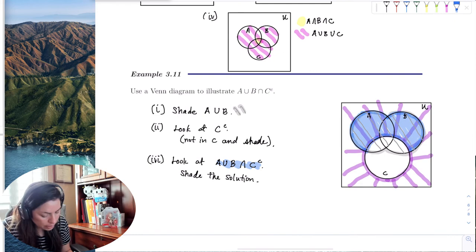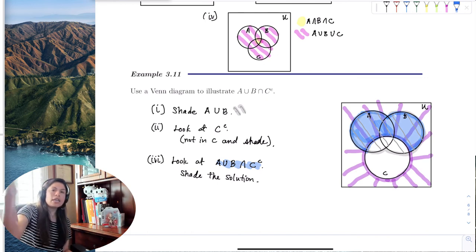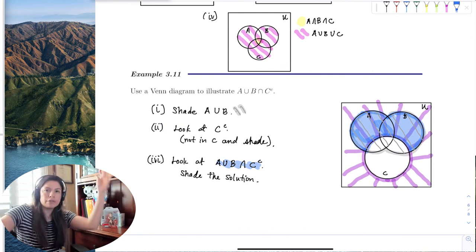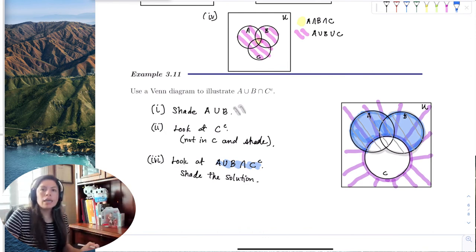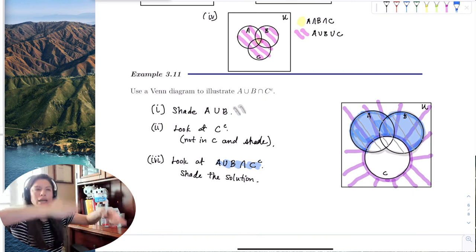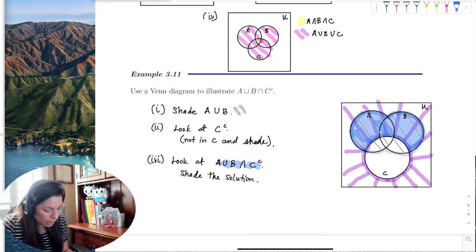And this is A union B intersection with C complement. So notice none of the C is shaded in blue because I can't include it. It was never included, it was the complement of C that was included. It was everything outside of C. And then if I intersect that with the union of A and B, I do see some overlap between gray and purple, and therefore the blue is the solution.